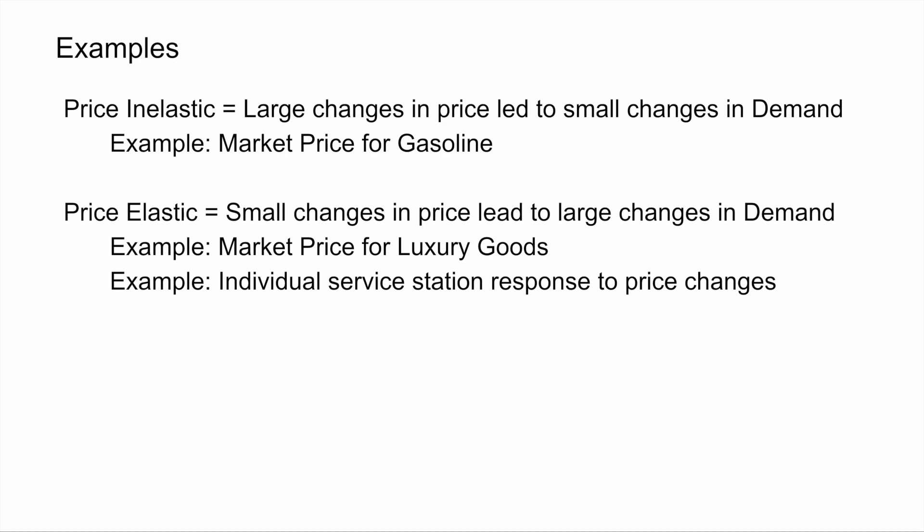A price elastic product tends to be one where the market is very competitive, so if you raise the price you will see a very significant demand drop. It may also refer to instances where consumers can defer their spending. For this reason, luxury goods are often held up as an example of elastic pricing. Ironically, while the industry price of gasoline is inelastic, an example of an elastic product is the price of gasoline at one particular gas station. If an Exxon station is charging $4 per gallon and a Chevron across the street is also at $4, but Exxon raises its price to $5 while Chevron stays at $4, then the demand drop at the Exxon station would be significant.